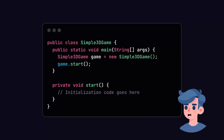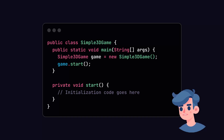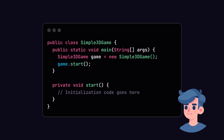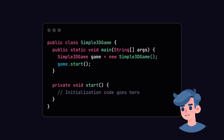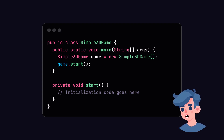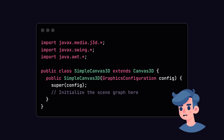Public class Simple3DGame. Public static void main String args: Simple3DGame game equals new Simple3DGame, then game dot start. In the private void start method, initialization code goes here. Next we need to set up the Java 3D environment.